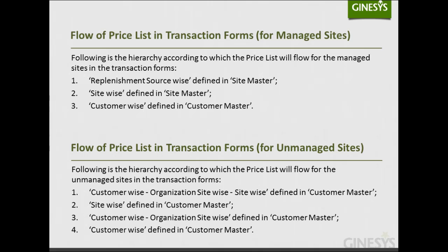For managed sites, the price list flows in the following hierarchy: first, replenishment-source-wise as defined in the Site Master; if not provided, then site-wise as defined in the Site Master; if that is also not provided, then customer-wise as defined in the Customer Master. For unmanaged sites, the hierarchy begins with customer-wise, organization-site-wise, customer-site-wise as defined in the Customer Master.